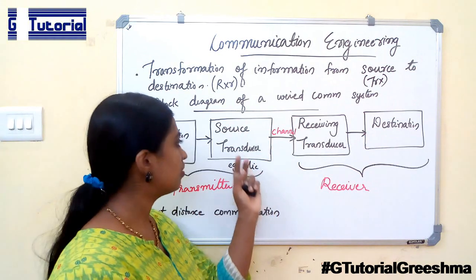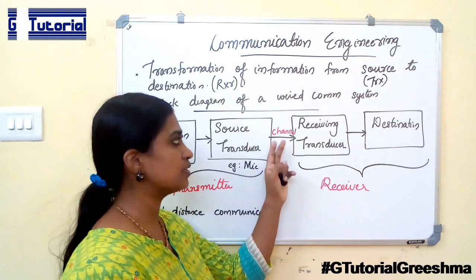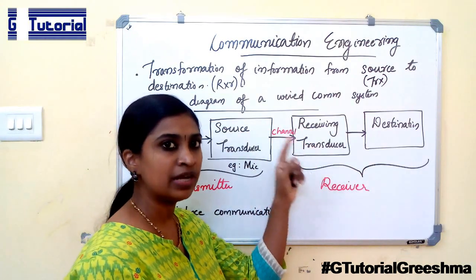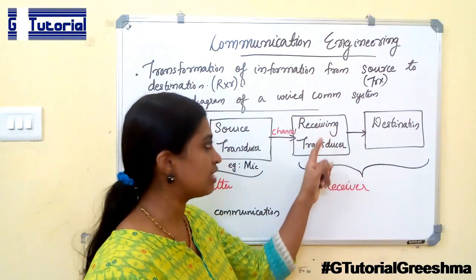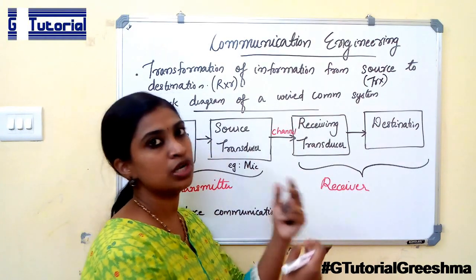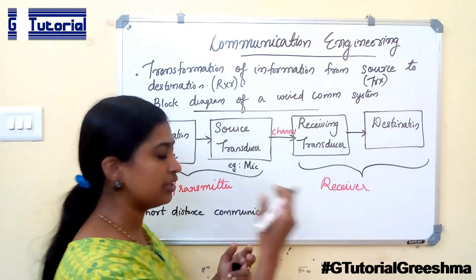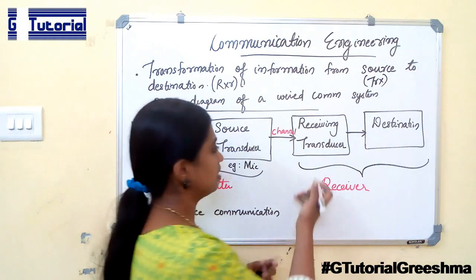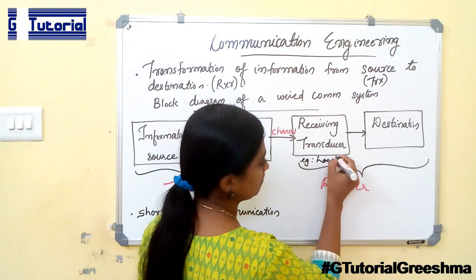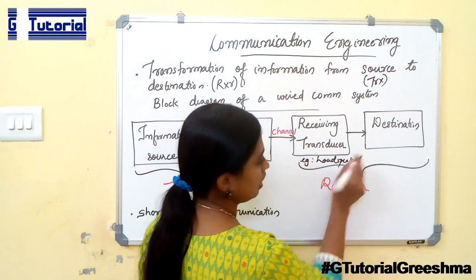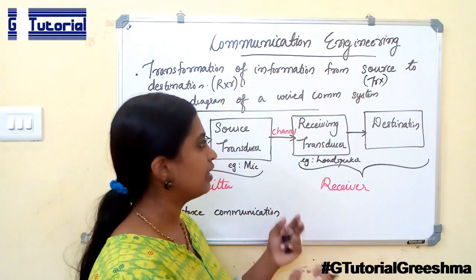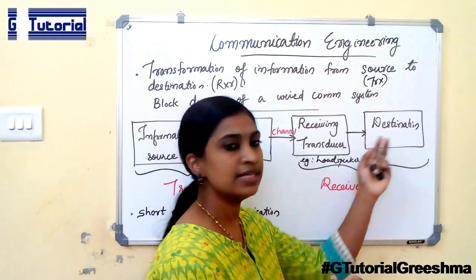The electrical signal at the output of the source transducer passes through the channel and is received at the receiver. The receiver transducer converts these electrical signals back to the original physical form. An example of a receiving transducer is a loudspeaker. The loudspeaker converts electrical signals to a sound signal, and it is delivered to the destination.